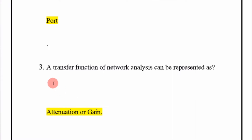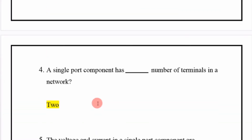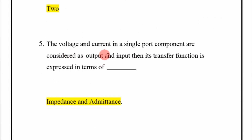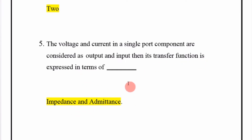A transfer function in network analysis can be represented as attenuation or gain. For a single-port component, which has two terminals, if voltage and current are considered as output and input, the transfer function is expressed in terms of impedance and admittance.